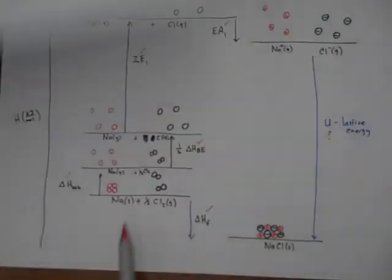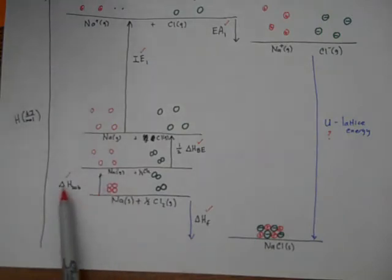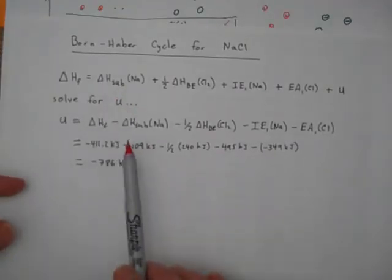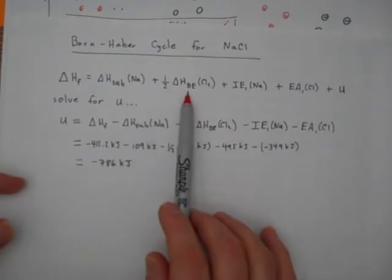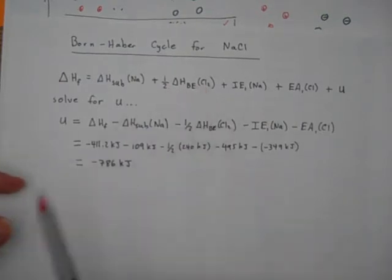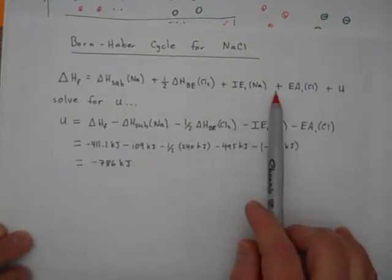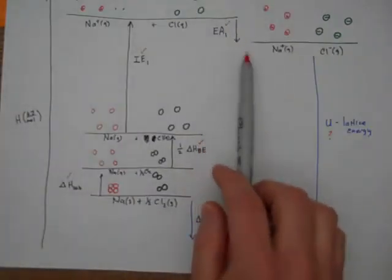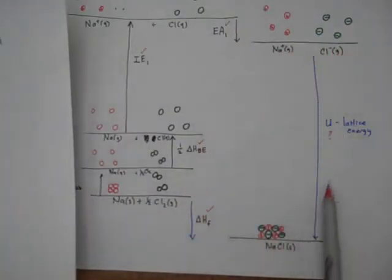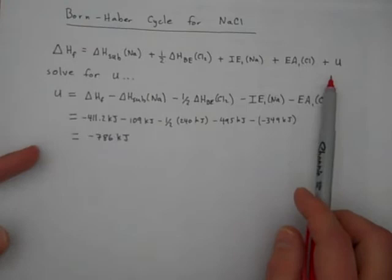That enthalpy change equals the sum of all the enthalpy changes going around this cycle. The first enthalpy change was sublimation, delta H sub. The next was the bond enthalpy for breaking the chlorine to chlorine bonds. Next was the ionization energy for sodium, then the electron affinity. Now we're to here, and the last step was this lattice energy U. That's what we're trying to calculate.